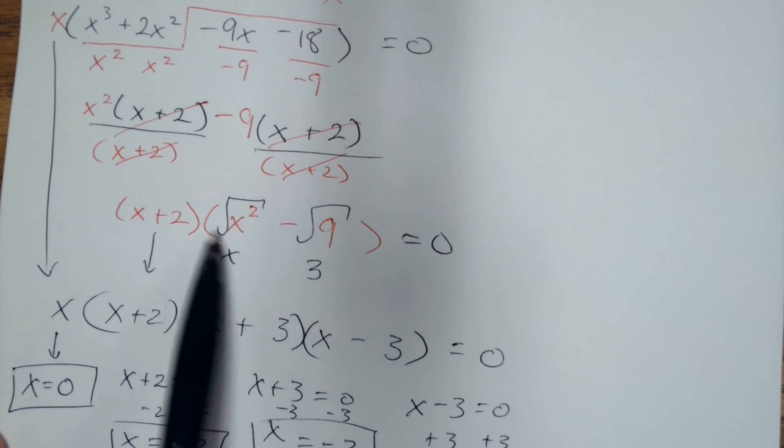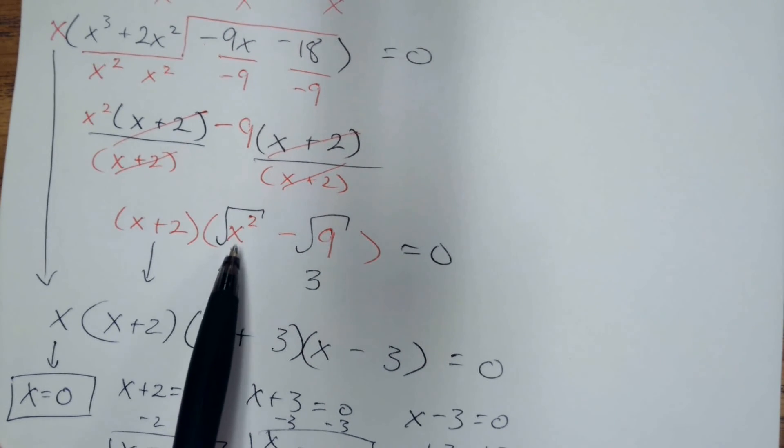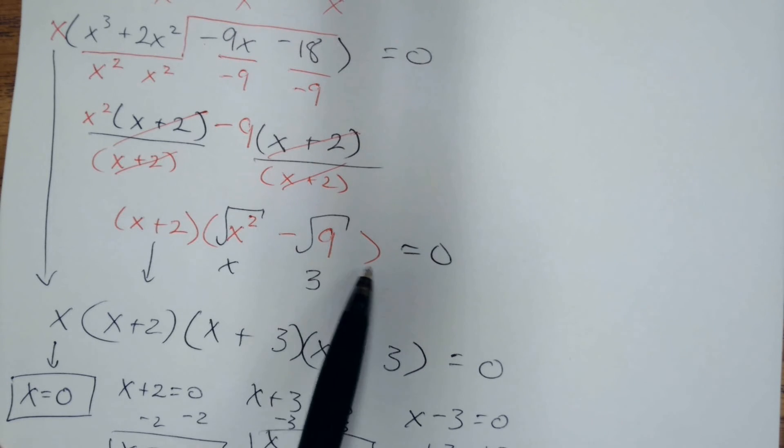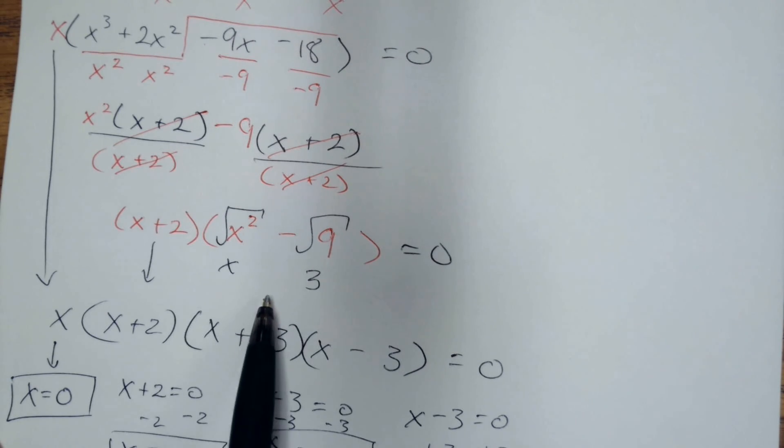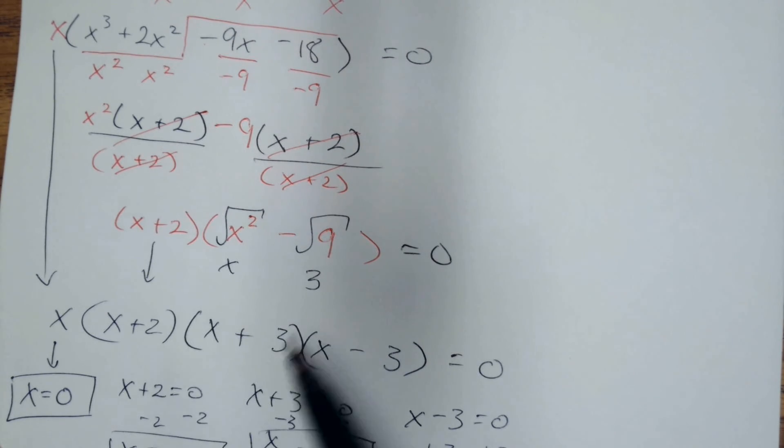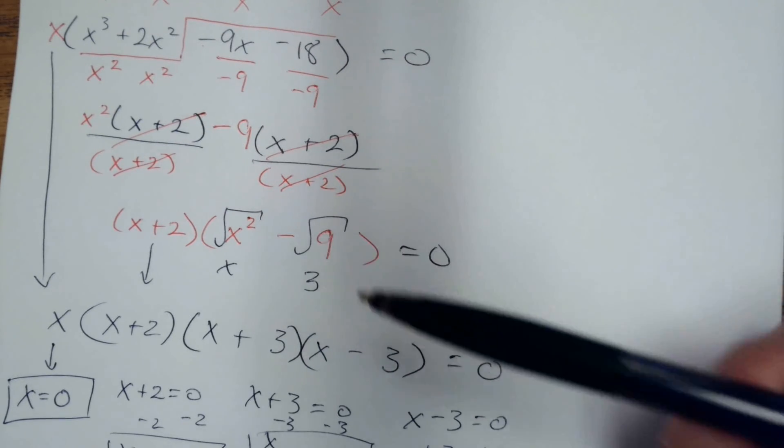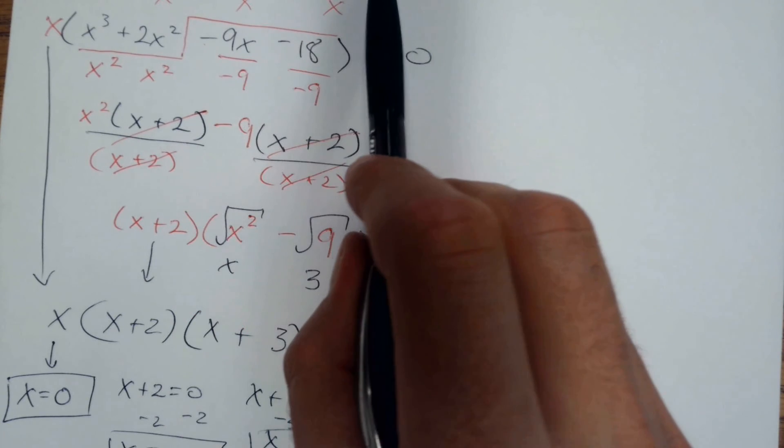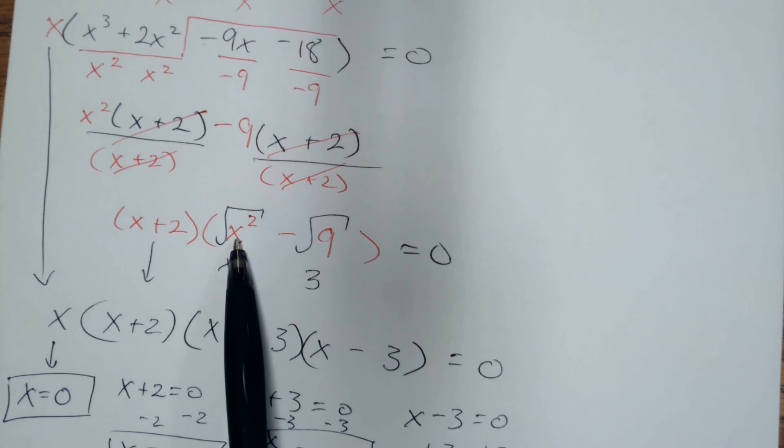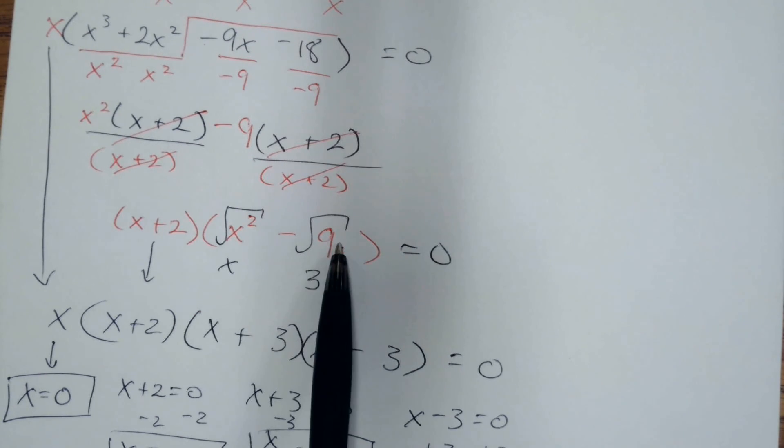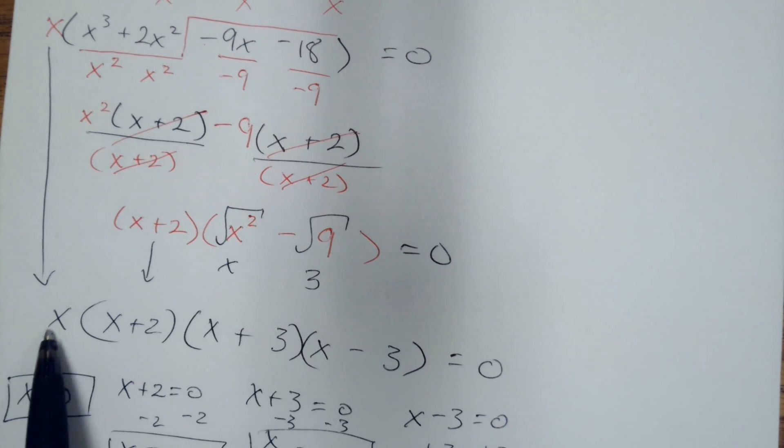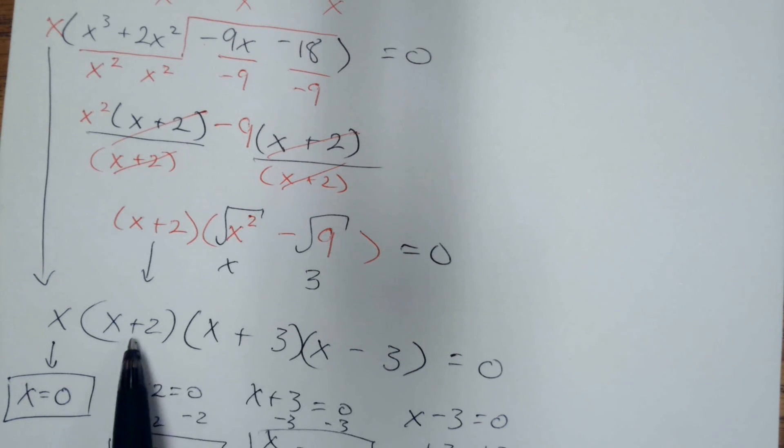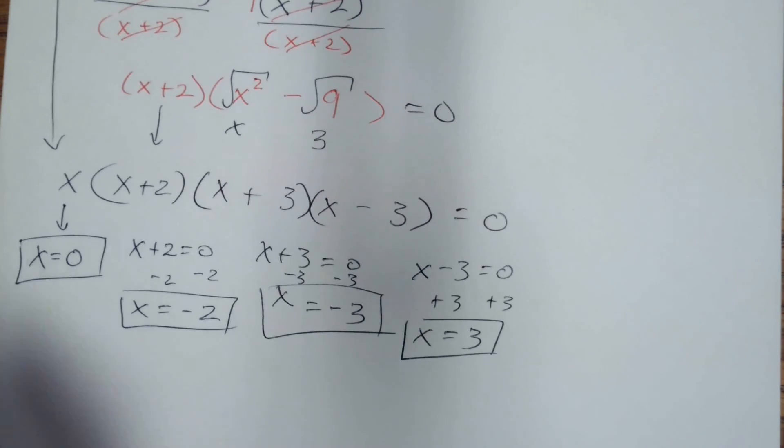But then in this step, I think you might get x to the third minus 9x. And then you would factor out an x from that. So you're always looking back in your parentheses to see if you can factor it more. So if you just went straight to factor by grouping, I think this would have been x cubed minus 9x. And then you would have factored out an x, and that's where it would come from. And then this would become those two, and you'd still have that. Good question.